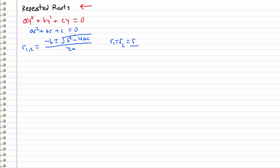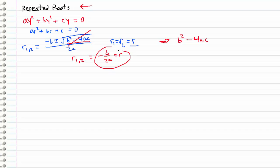This happens whenever the discriminant is equal to zero — that is, whenever b squared minus 4ac equals zero. When this cancels out, we're left with r1 and r2 both equal to negative b over 2a, with no plus or minus to give a second distinct root. So this is our only root, r.